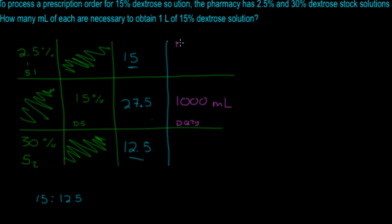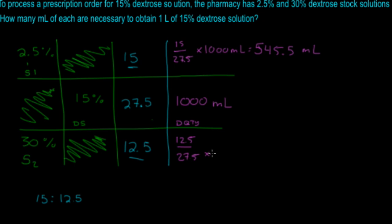Take 15 divided by 27.5 times 1000 milliliters, and that equals 545.5 milliliters. Then do the same for the other: 12.5 divided by 27.5 times 1000 equals 454.5 milliliters. When you add 545.5 and 454.5 together, you get 1000 milliliters — which confirms the answer.